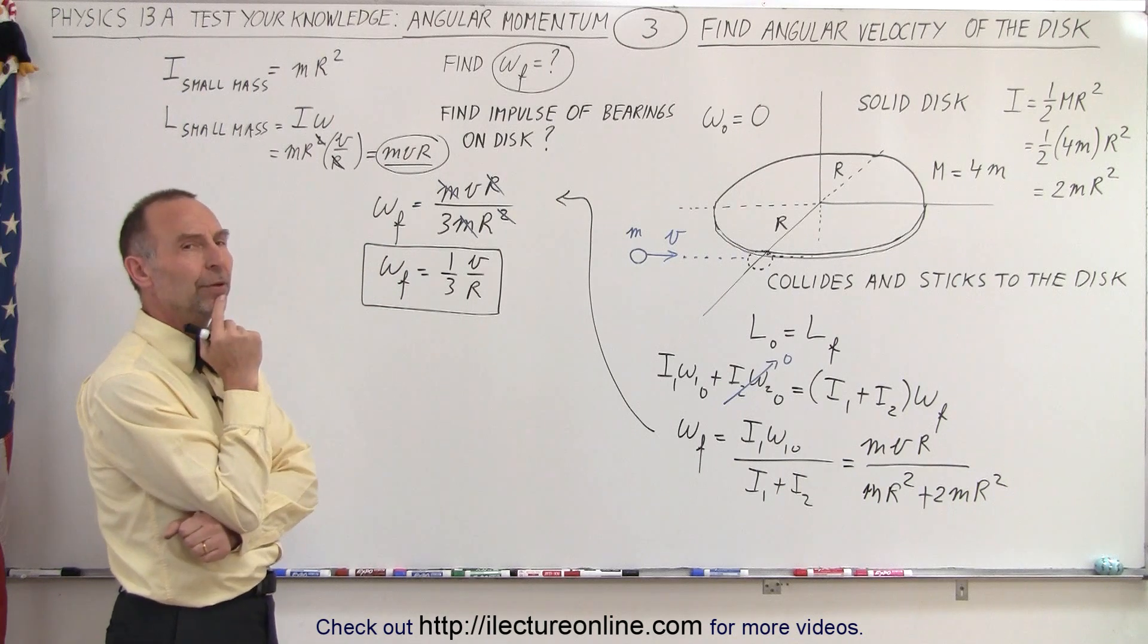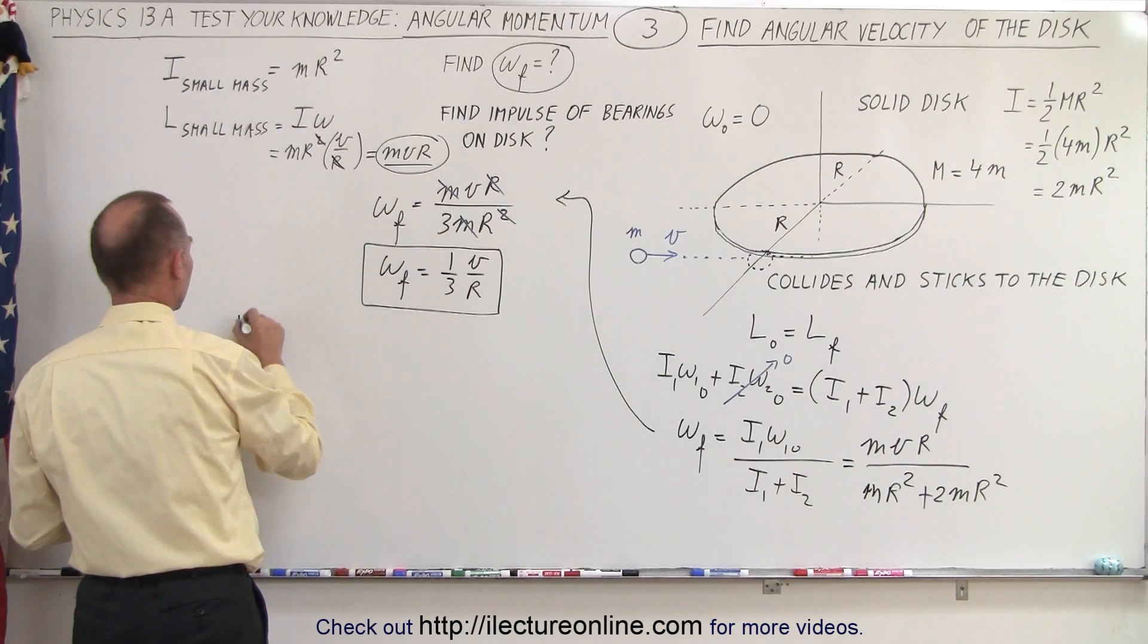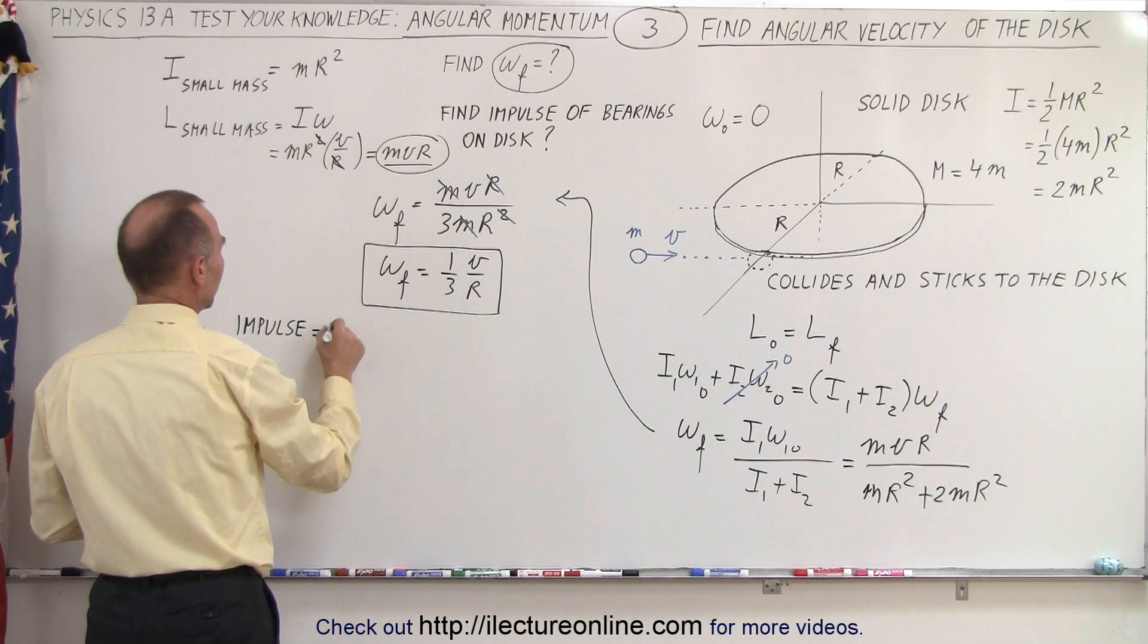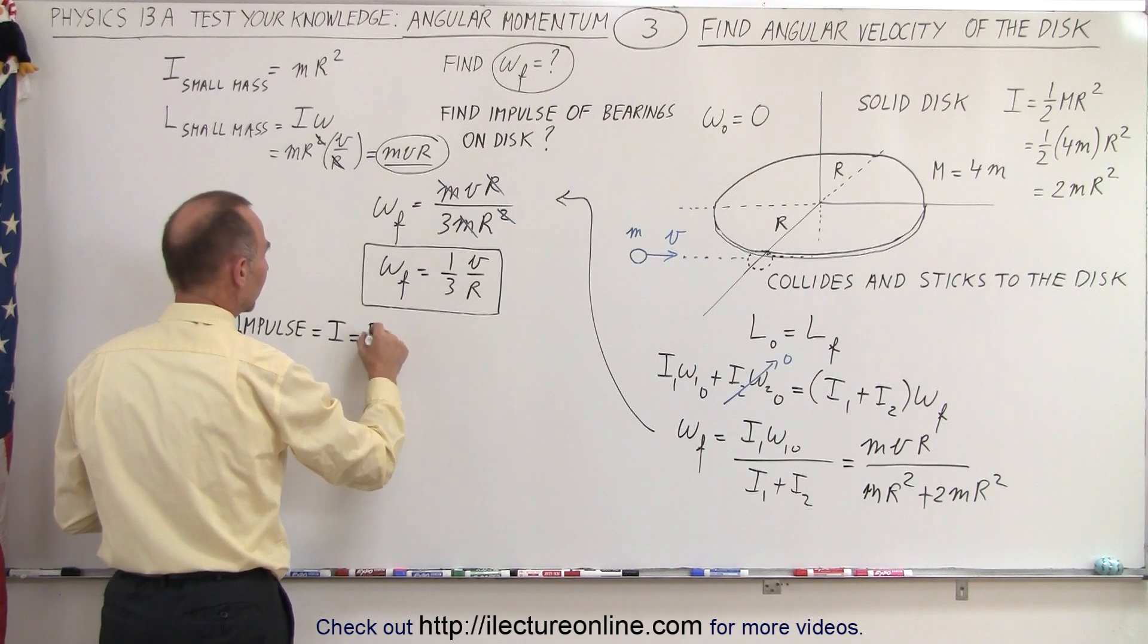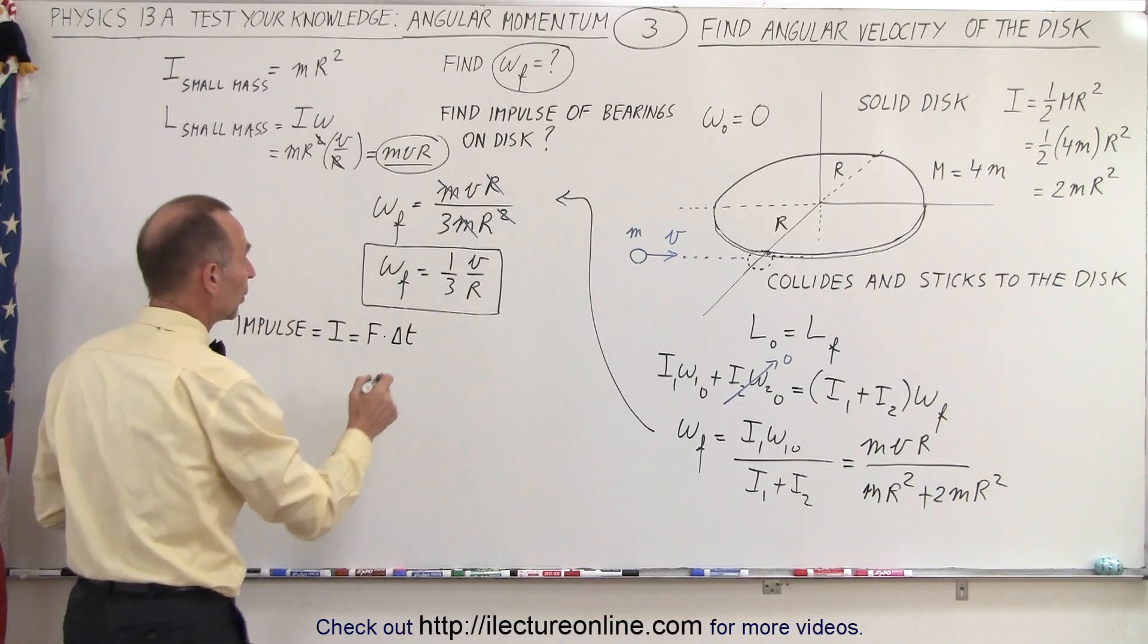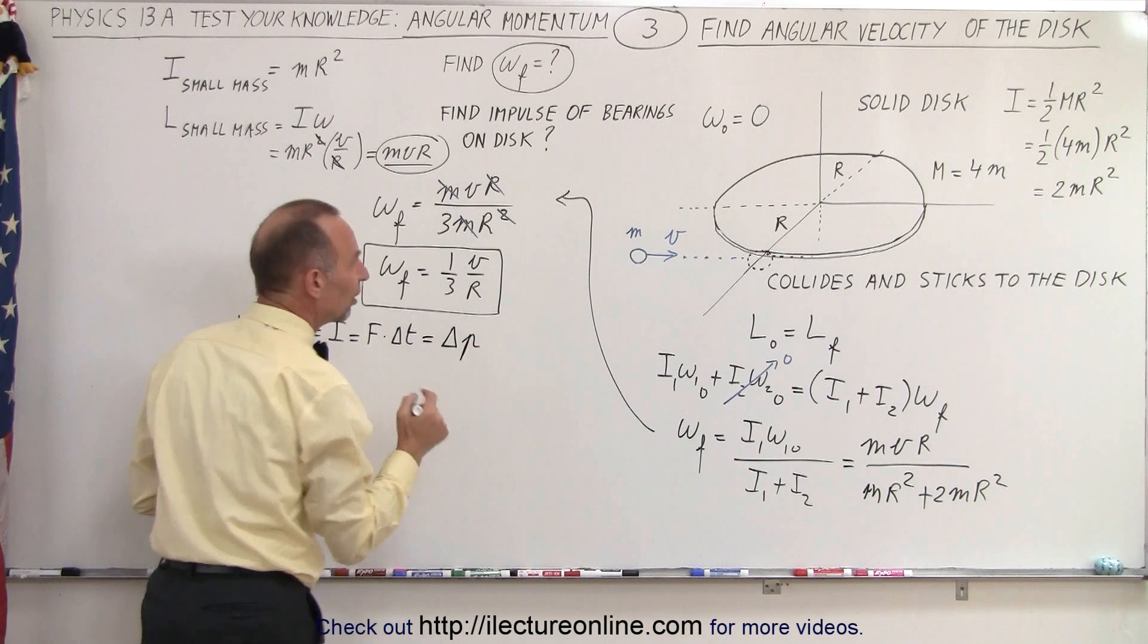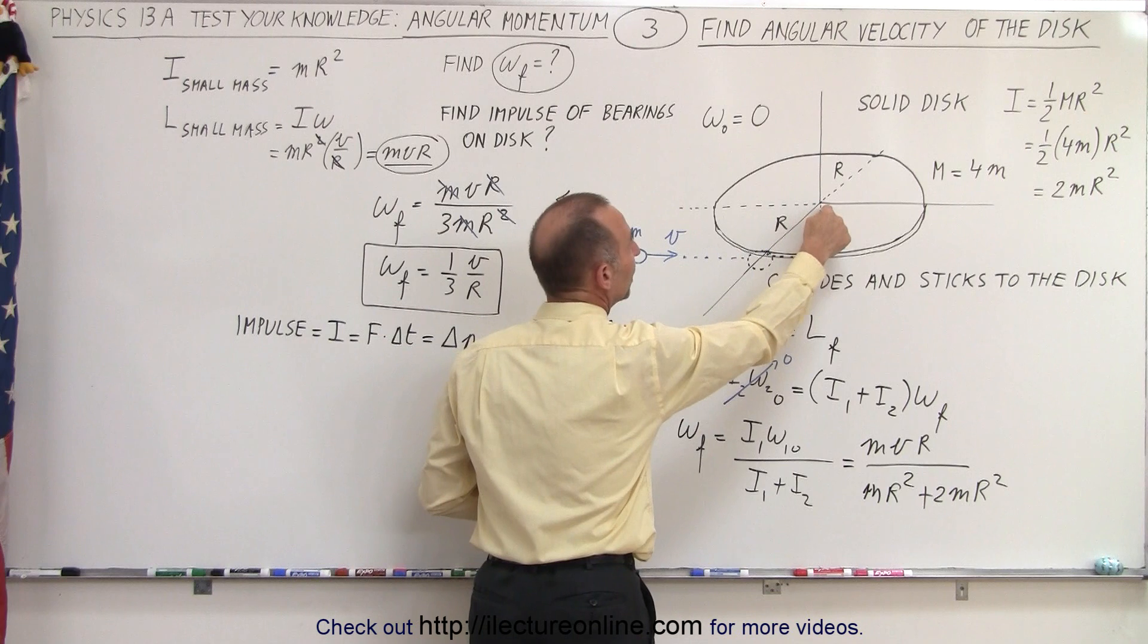Now what about the impulse? The impulse by definition—impulse, and I'll write down impulse otherwise we might confuse it with I of moment of inertia—impulse equals force times Δt. And since we don't know the time of the collision, we can also think of it as the change in momentum p.